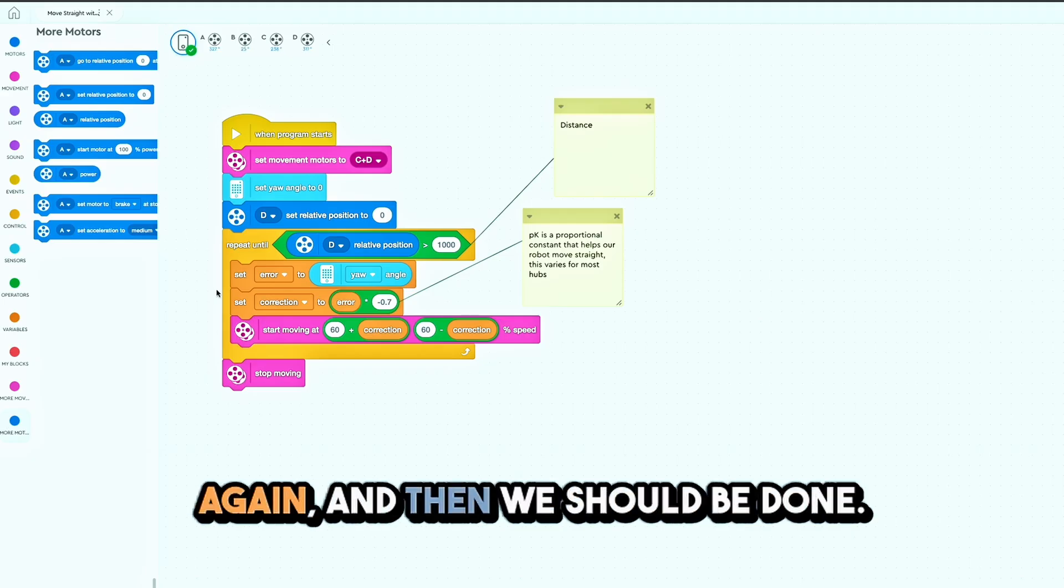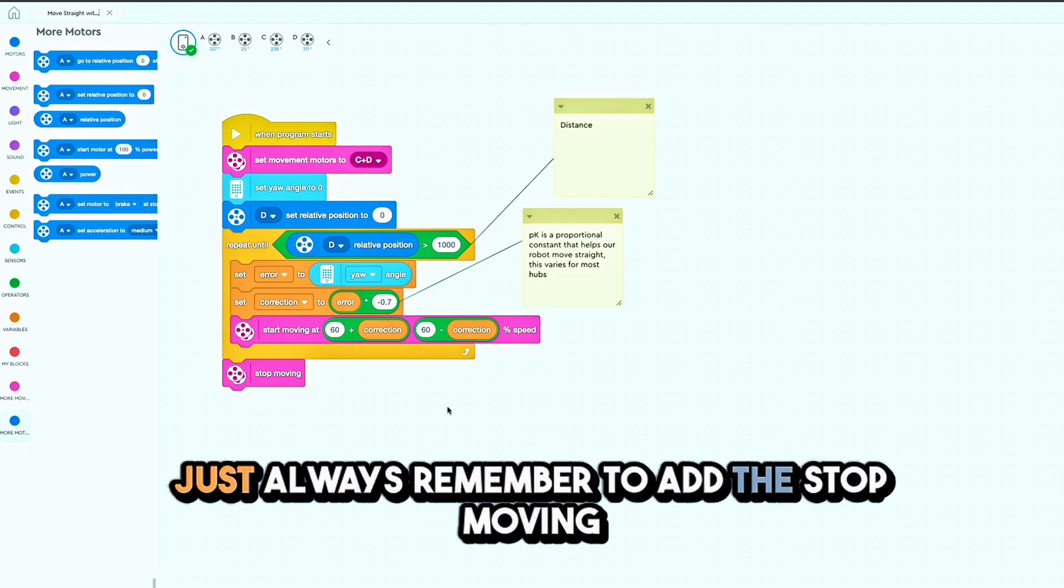We're going to set the motor to D again, and then we should be done. Just always remember to add the stop moving block at the end of your program.